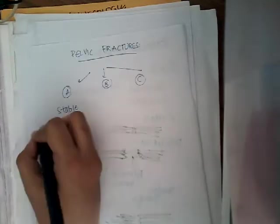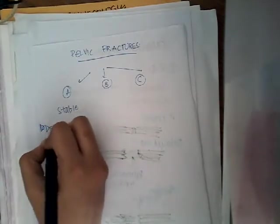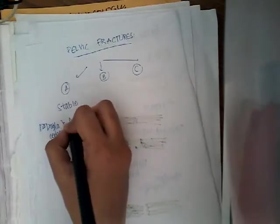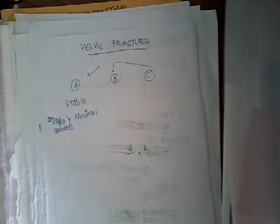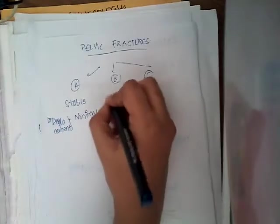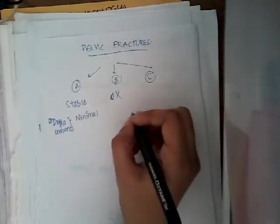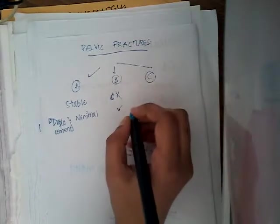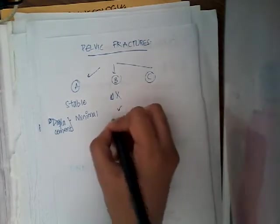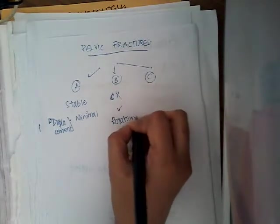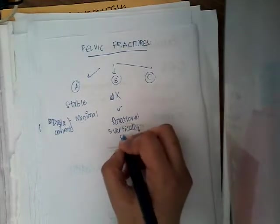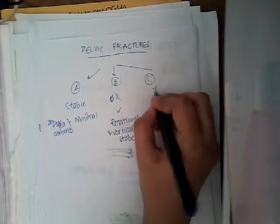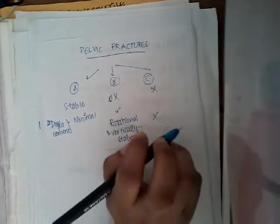In Type A, they are stable fractures and displacement is minimal. In Type B, they are unstable fractures and are displaced, but they are rotationally and vertically stable. In Type C, they are unstable, and they are also rotationally and vertically unstable. That is the main difference between the three types.